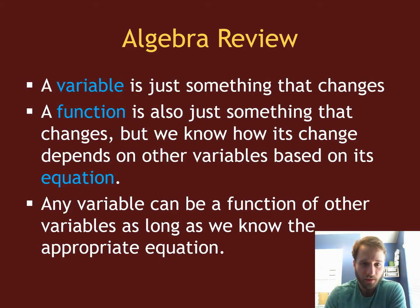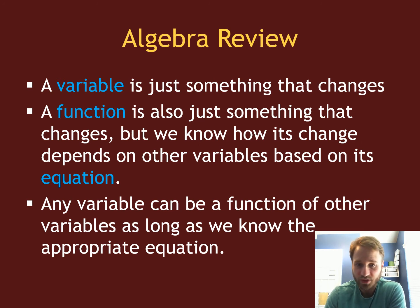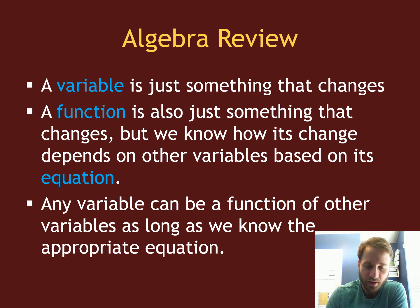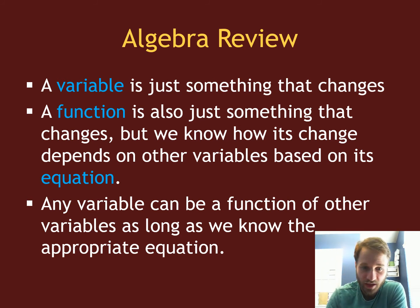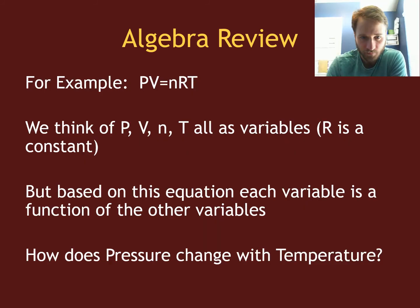A variable is something that changes. A constant doesn't change. A variable can change. A function is also something that changes, but for a function, we know how it changes based on other variables in a given equation. So if I have a set of variables that are related to each other through some equation, any of those variables can be a function of the other variables, as long as we know that equation and write it in the appropriate form.